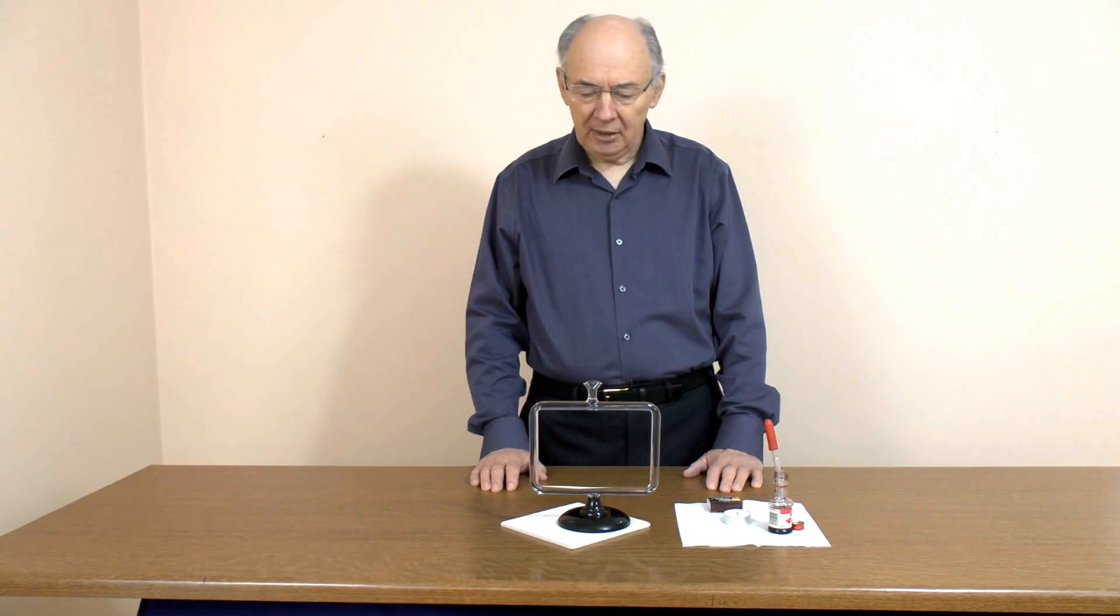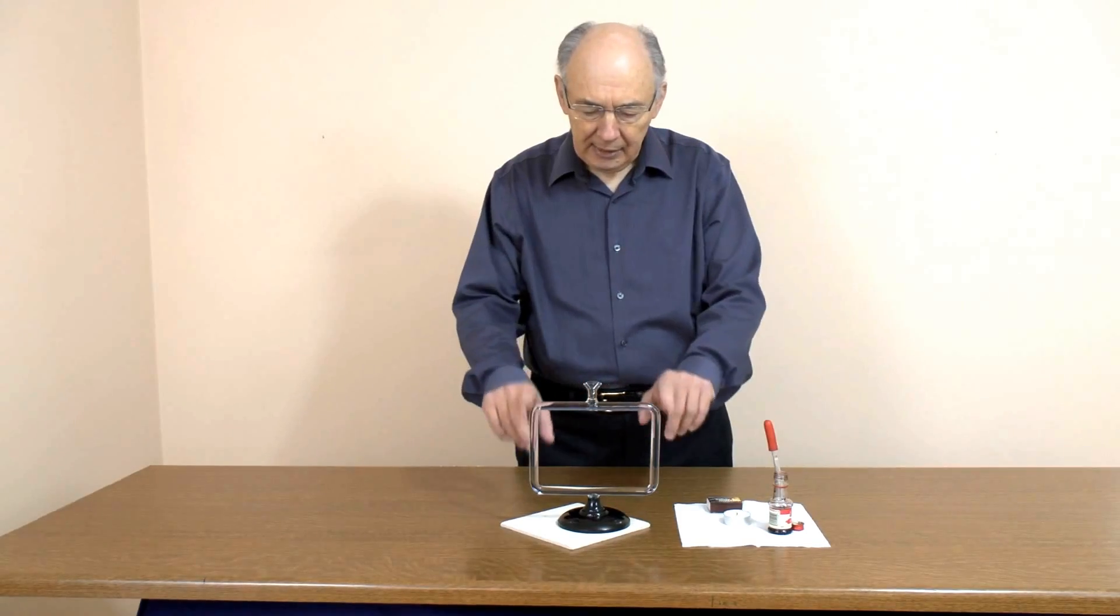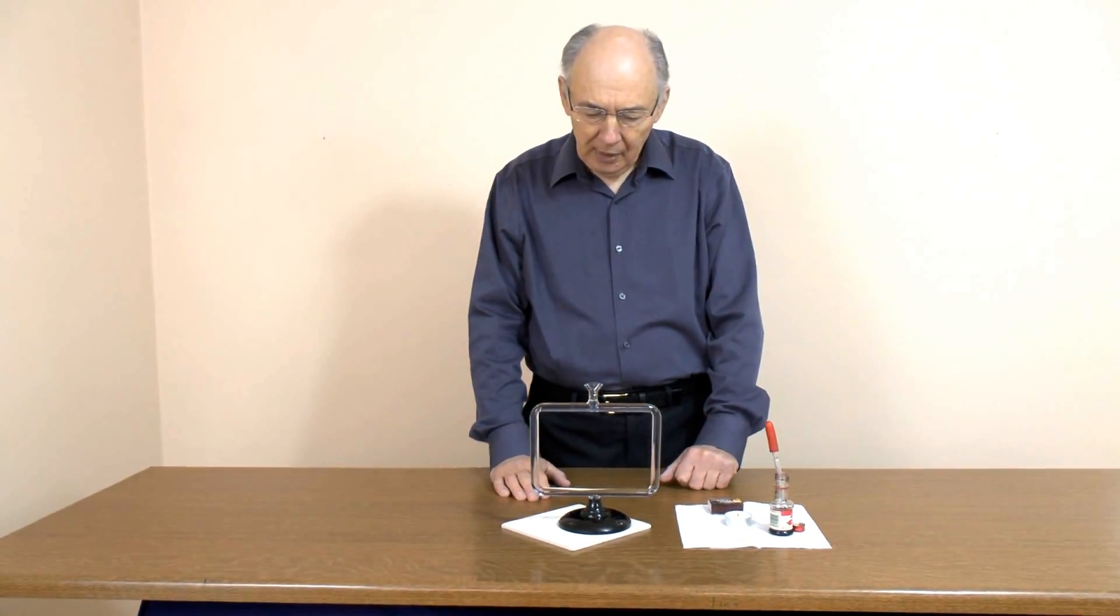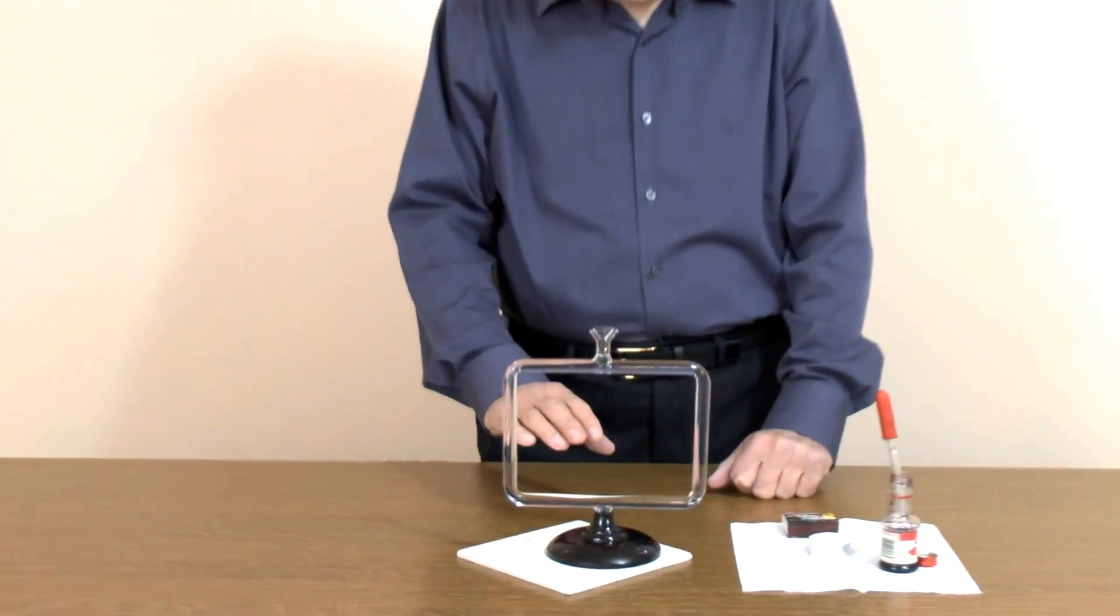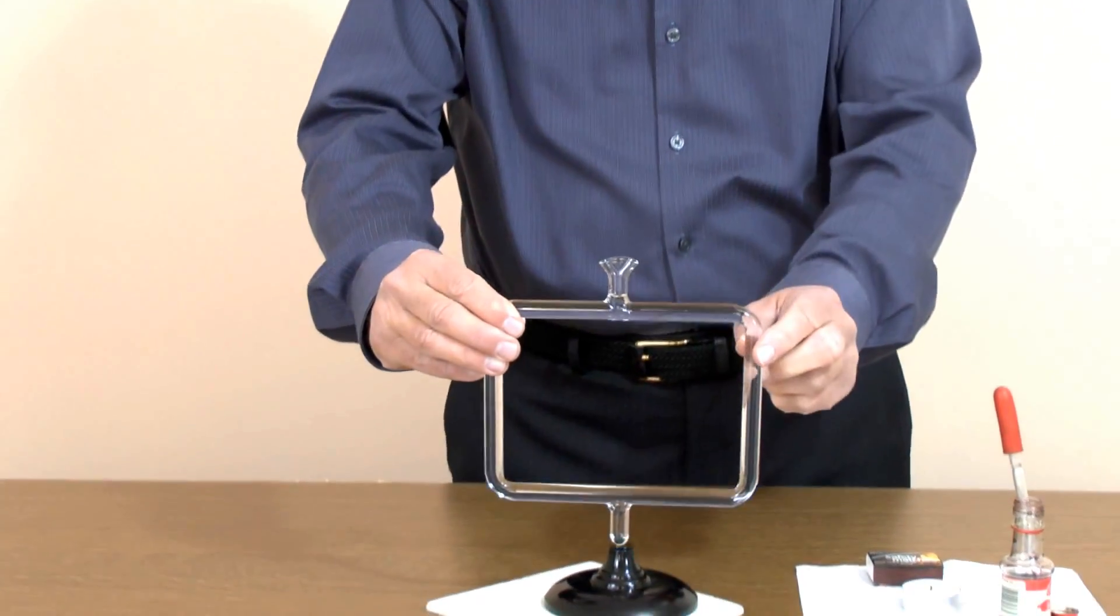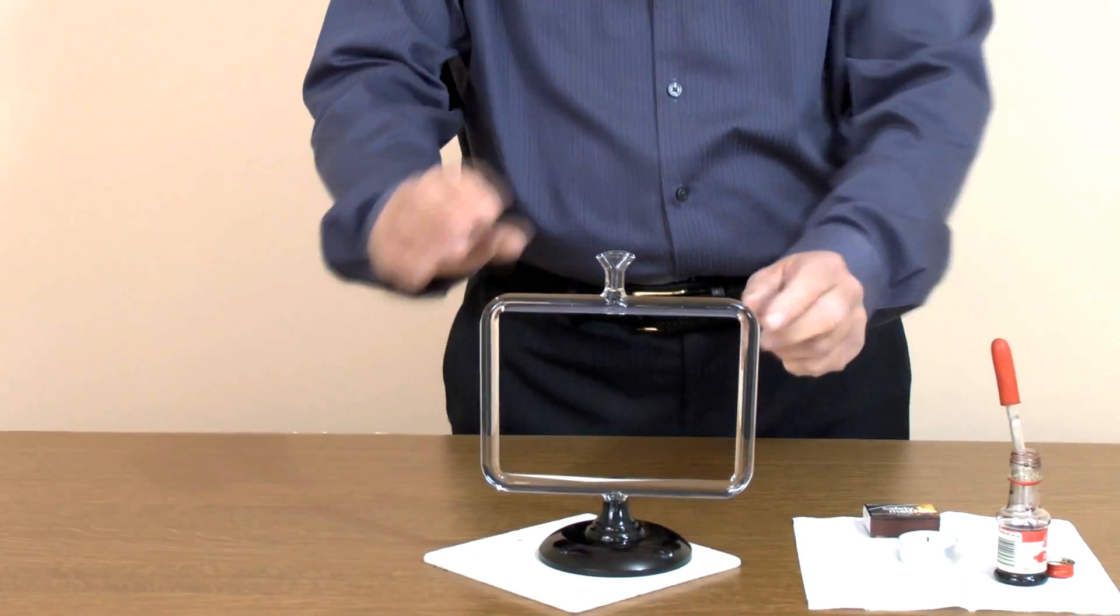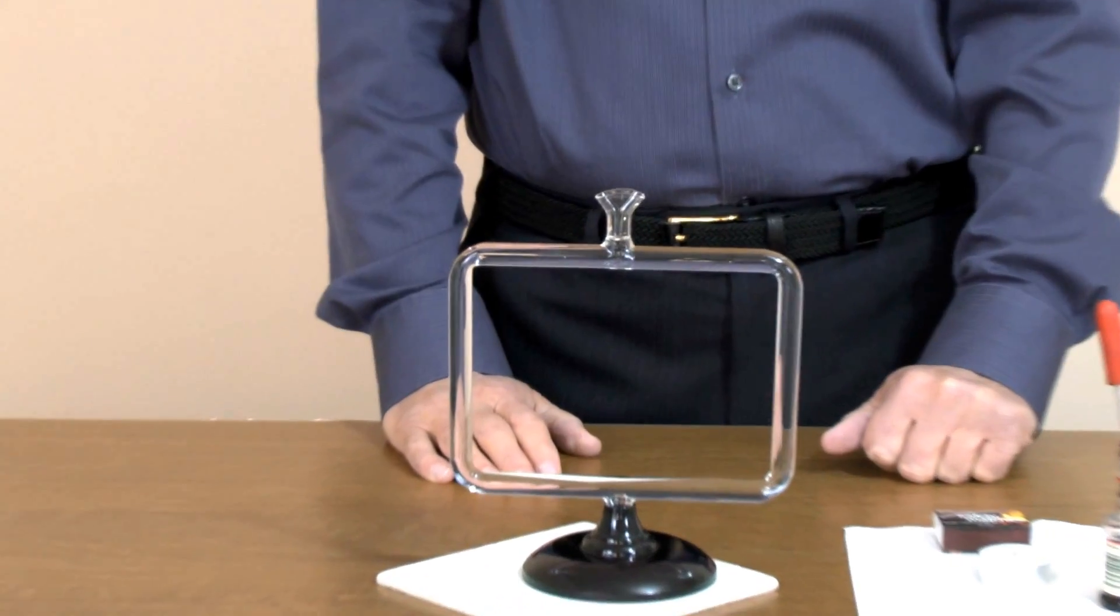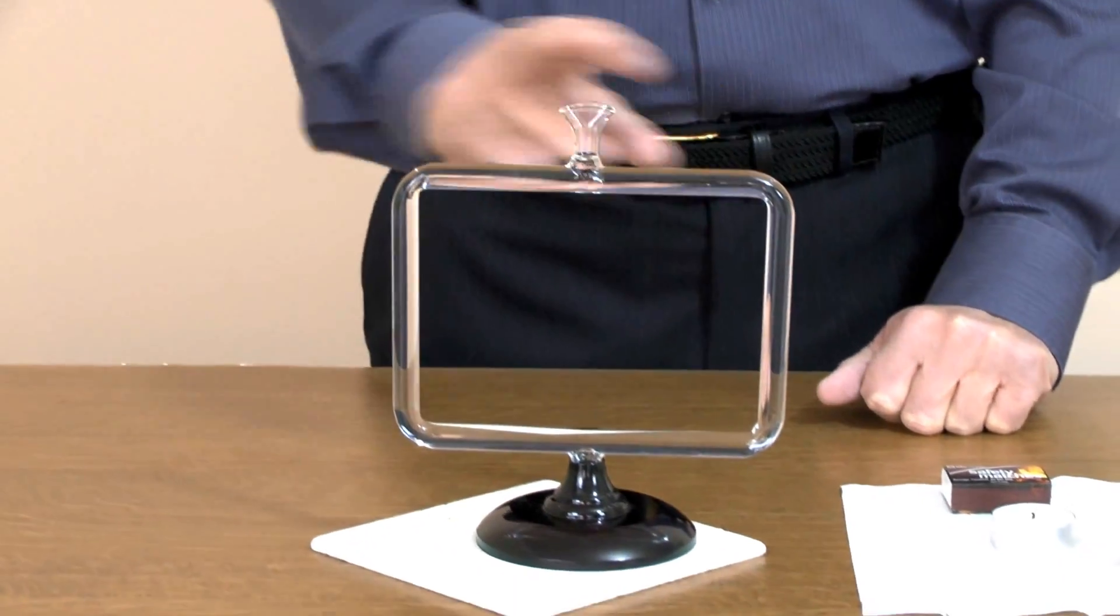This apparatus is for studying convection in liquids. It consists of a rectangular glass tube which we fill with water. The base here is a small part that fits into the stand, and at the top we have a funnel for filling it with the water.